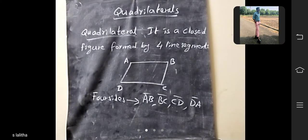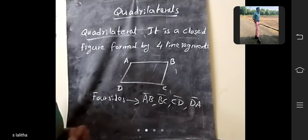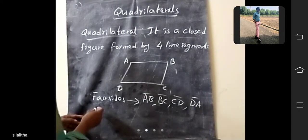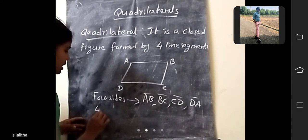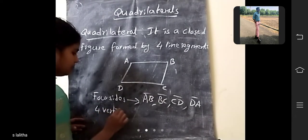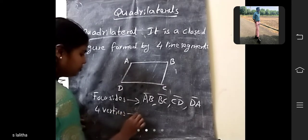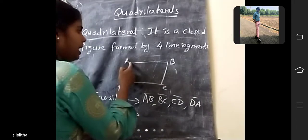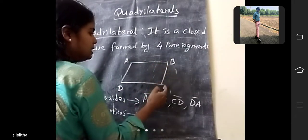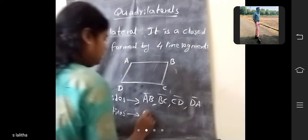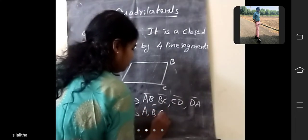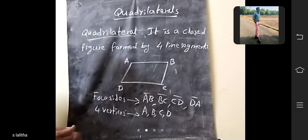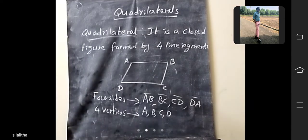And next, vertices. Vertices means corners. How many vertices are there? Here also 4 vertices. What are those vertices? A, B, C, D. These are the 4 vertices.